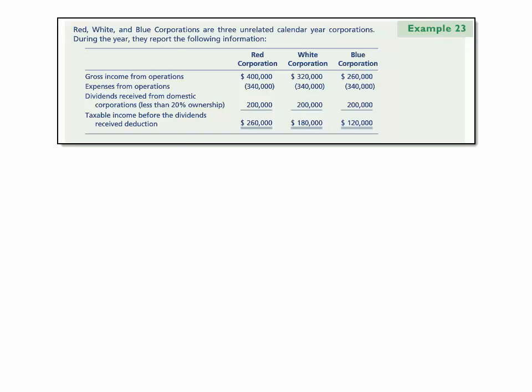Let's work through this example. We have Red, White, and Blue Corporation — three unrelated corporate calendar year corporations. During the year, gross income is $400,000, $320,000, and $260,000 for Red, White, and Blue respectively. Expenses are $340,000 each. Dividends received from a domestic corporation where there was less than 20% ownership was $200,000 in each case. So taxable income before the dividends received deduction is $260,000 for Red, $180,000 for White, and $120,000 for Blue.